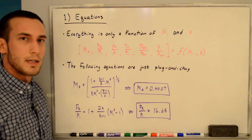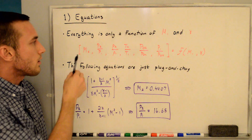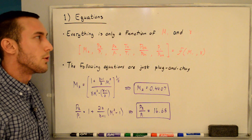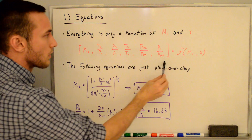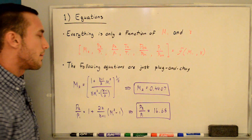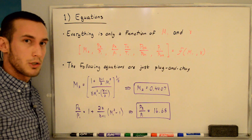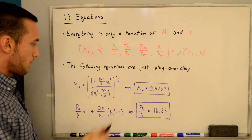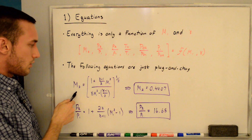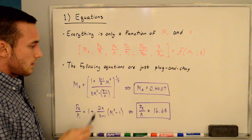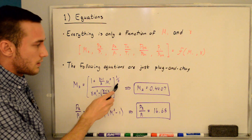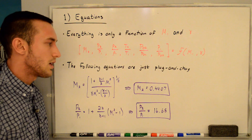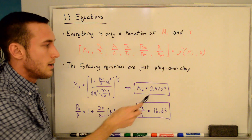Starting with the equations: all variables we want to solve for are only a function of the upstream Mach number M1 and gamma, both of which are given. So these equations are just plug-and-chug. For the downstream Mach number M2, we have an expression that is only a function of M1 and gamma — don't forget to take the square root. We get M2 = 0.4407, which is subsonic (less than one), so that checks out.